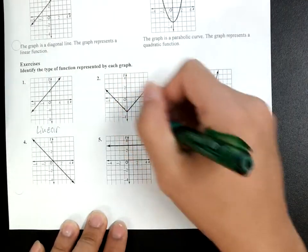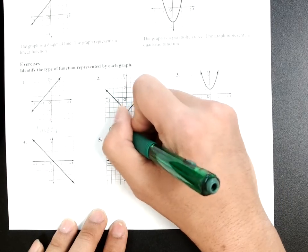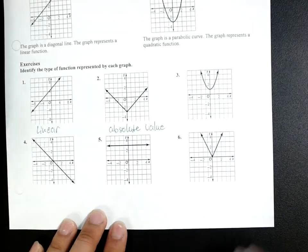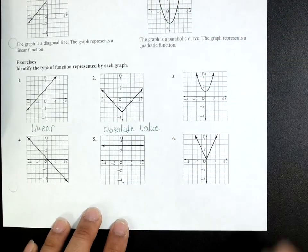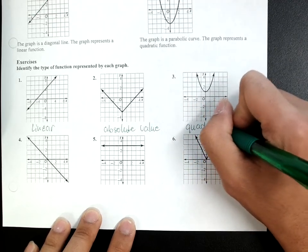Okay, if it makes a V, if it's a V shape, I know that's absolute value. If it makes a parabola shape, well, I know that's quadratic.